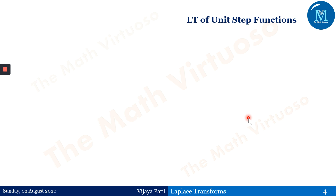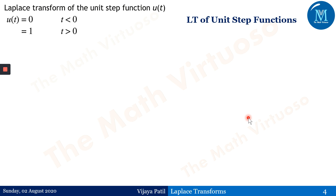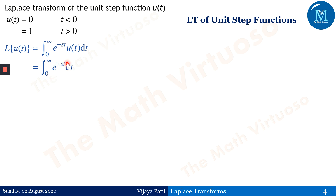Let us find the Laplace transform of the unit step function. We'll be deriving it using the definition of the Laplace transform, as we have done in lecture 2. The Laplace of u(t) is defined as the integral from 0 to infinity of e^(-st) · u(t) dt. Since u(t) equals 1 for t greater than 0, we substitute u(t) as 1 and integrate e^(-st), giving e^(-st) / (-s) from 0 to infinity. Applying the limit, the result is 1/s.